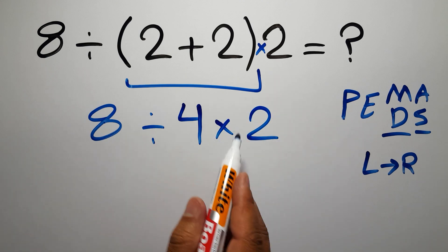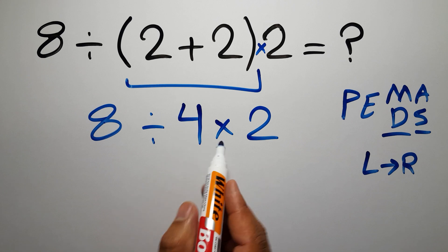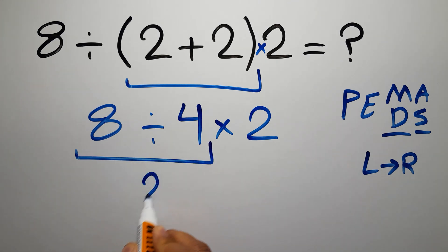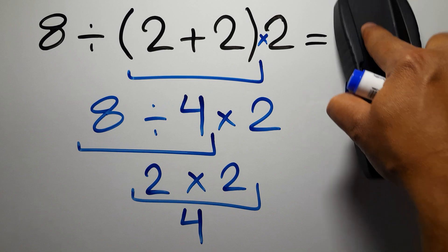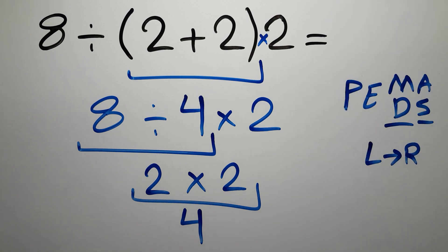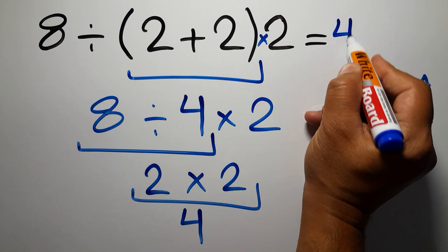Now we have to go from left to right. 8 divided by 4 gives us 2, and 2 times 2 is just 4. And this is our final answer to this problem. The correct answer is 4.